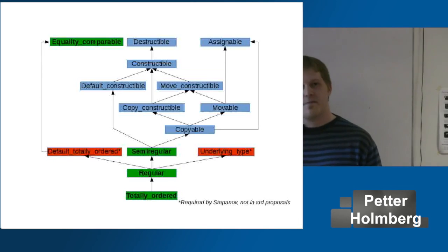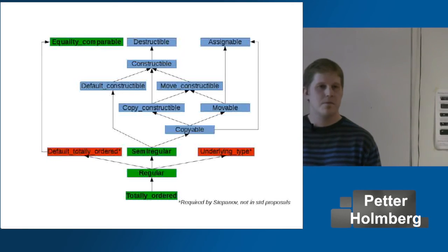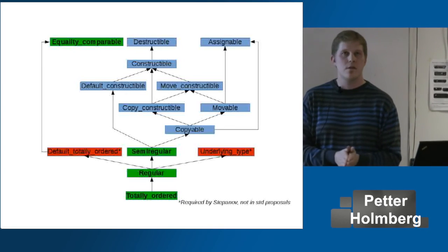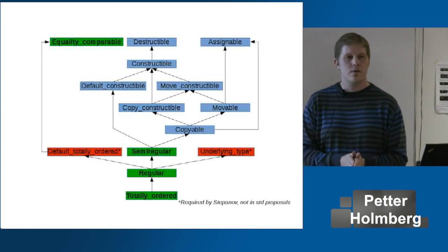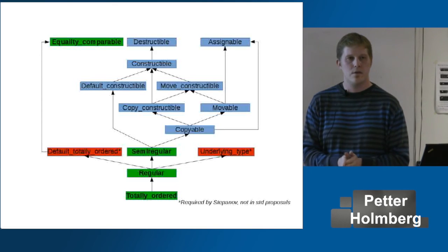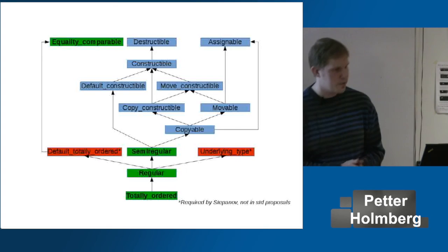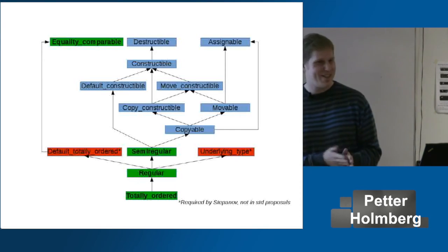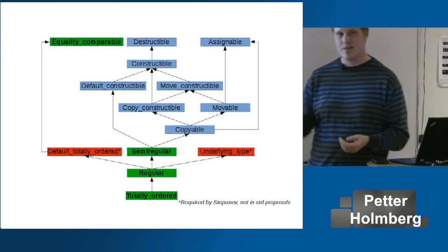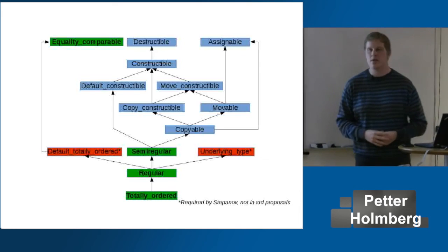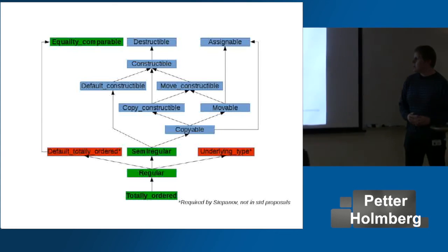Another audience point: `std::vector` requires copyable, but not notably. You don't need an object to be notably with storage in vectors. Interesting points — there may be changes in the ranges proposal related to that.